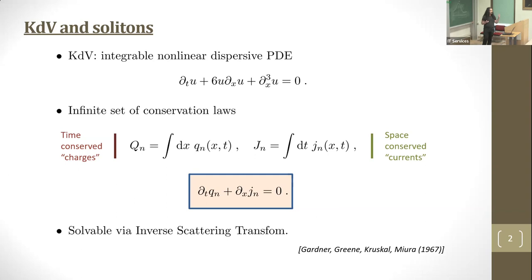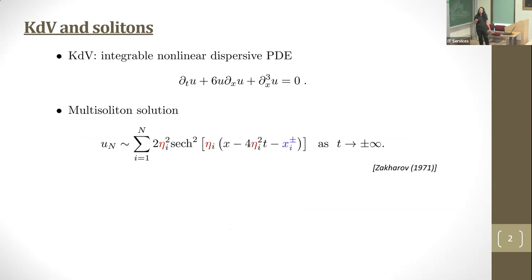I won't go into the details but directly use the results. By multisoliton solution, I mean a solution that asymptotically decomposes into a train of well-separated solitons. Each soliton for KDV is indexed by two parameters. First, eta, a spectral parameter controlling amplitude and velocity. For KDV, all solitons have positive velocity.